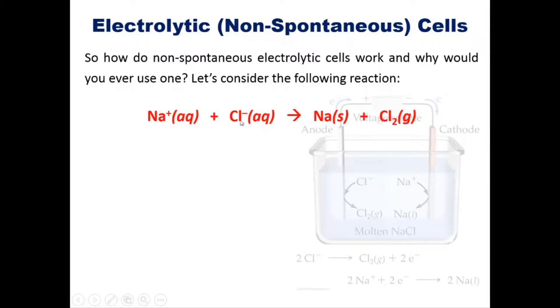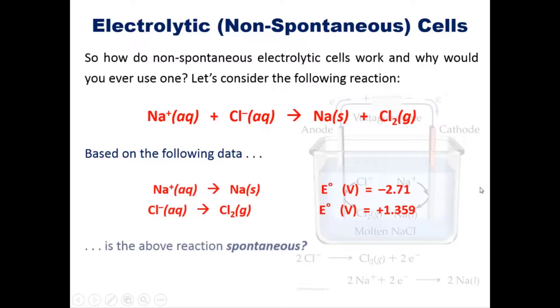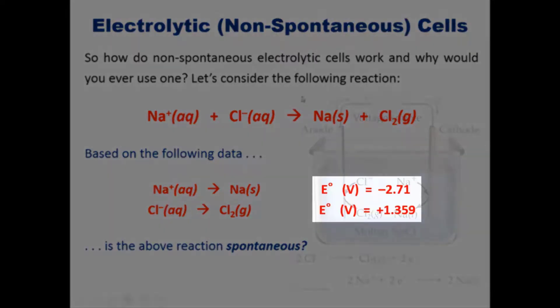If you wanted to react sodium cation with chloride anion to form individual sodium metal and chlorine gas, given the following data (that is, the reduction potentials for sodium going to sodium metal and chloride going to chlorine gas), is this reaction spontaneous?